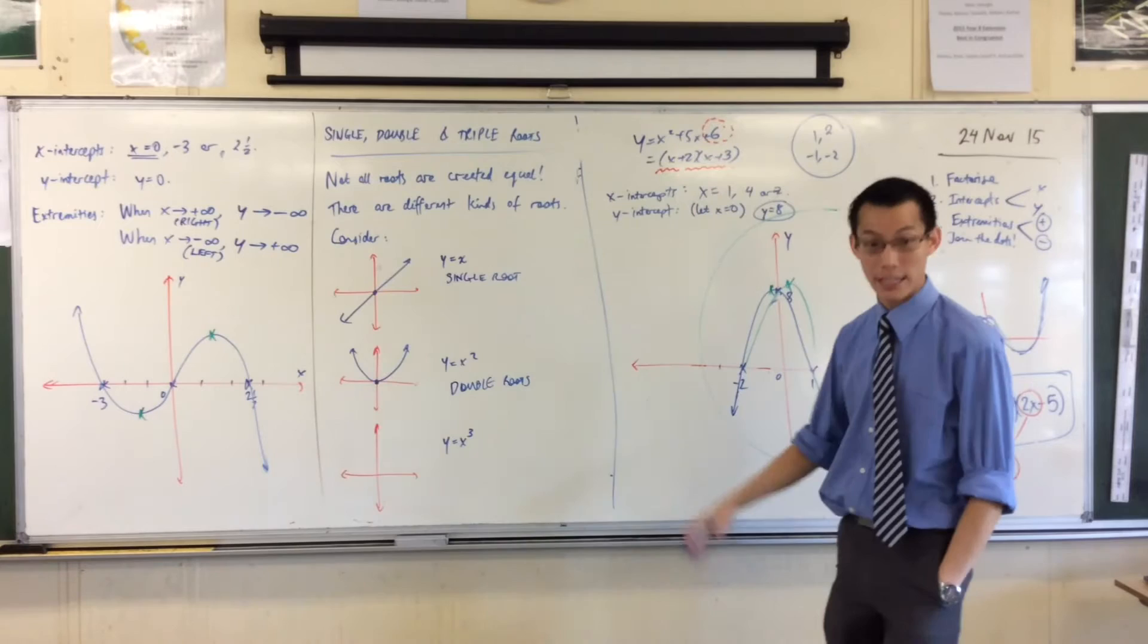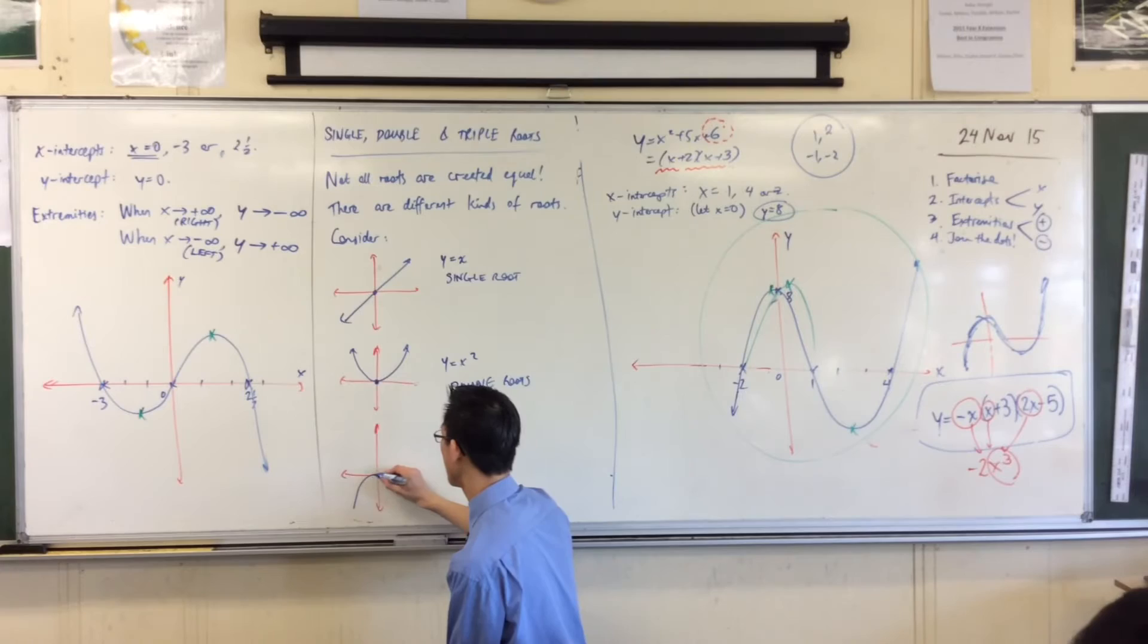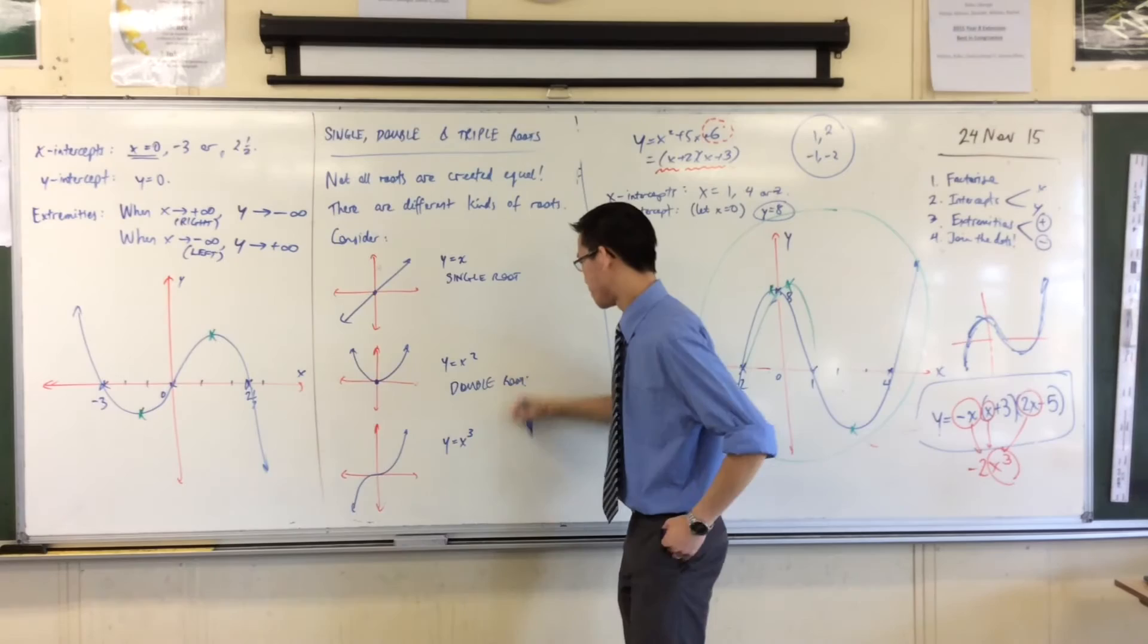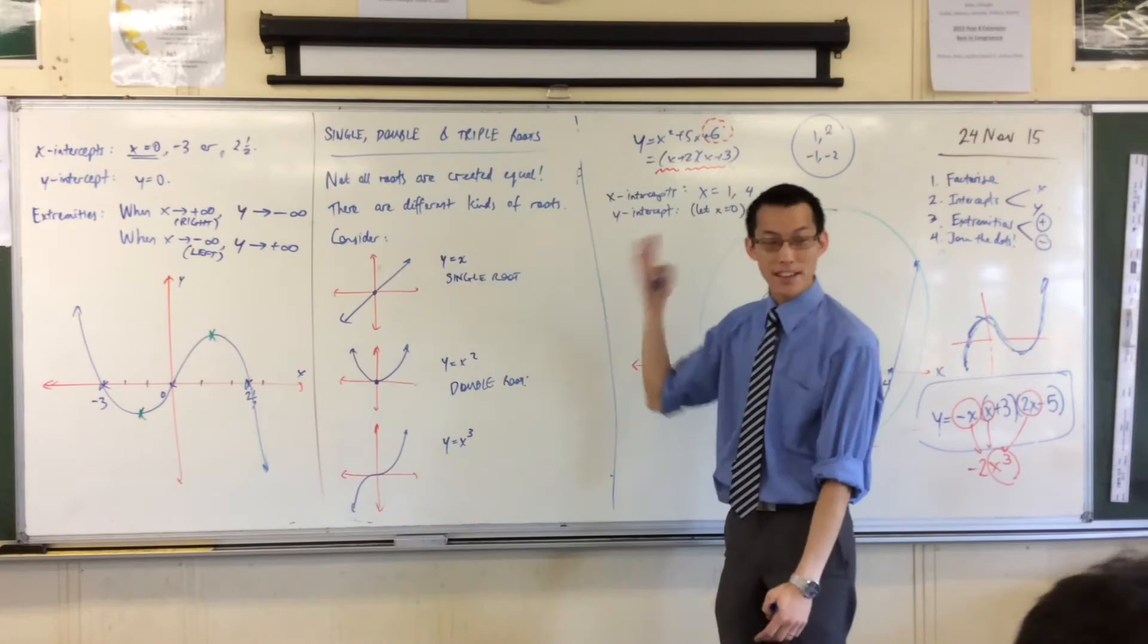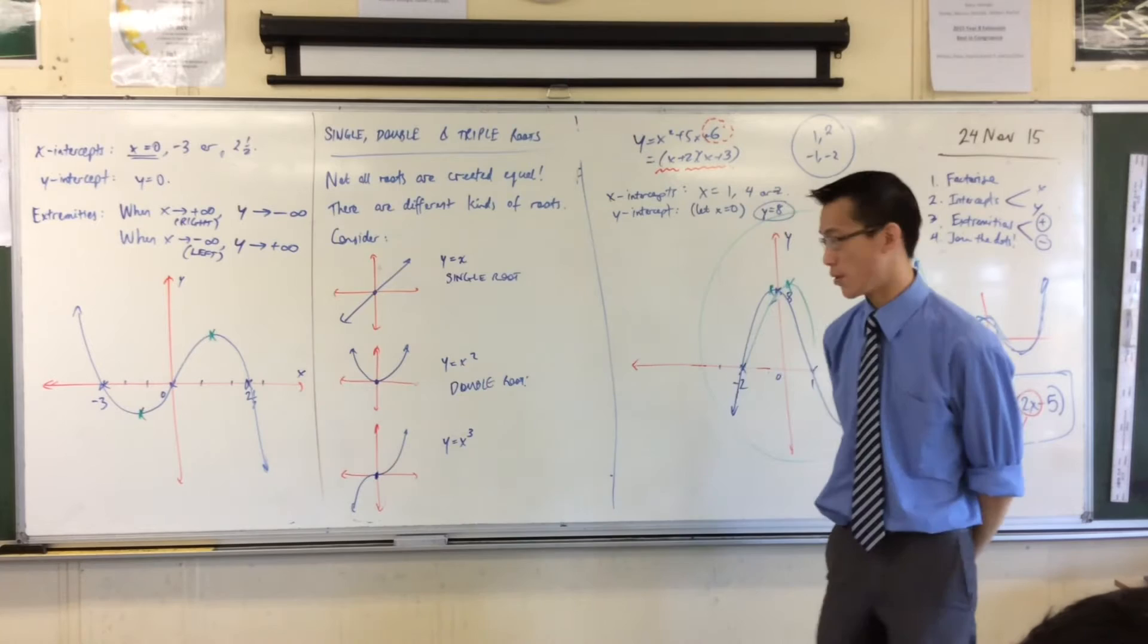Because when we had a look at quadratics, we expect them to have two roots. One here, one here. Well, this guy kind of has two roots as well. They just happen to be both at the same spot. They're both at x equals zero. So being that there are kind of two sitting on the same spot, we call these double roots.